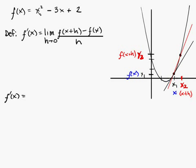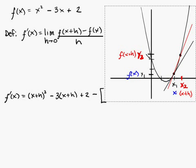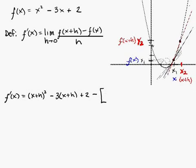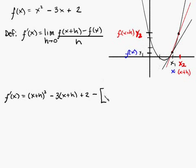f prime of x is equal to, now, for every single x, I'm going to replace it with x plus h, so watch this. x plus h quantity squared, that represents this, minus 3 times x plus h, plus 2, minus, and I'm going to put this in bracket because a lot of people messed this up.